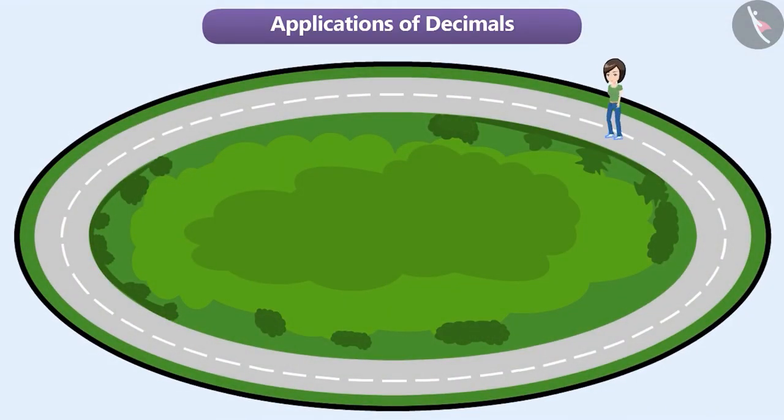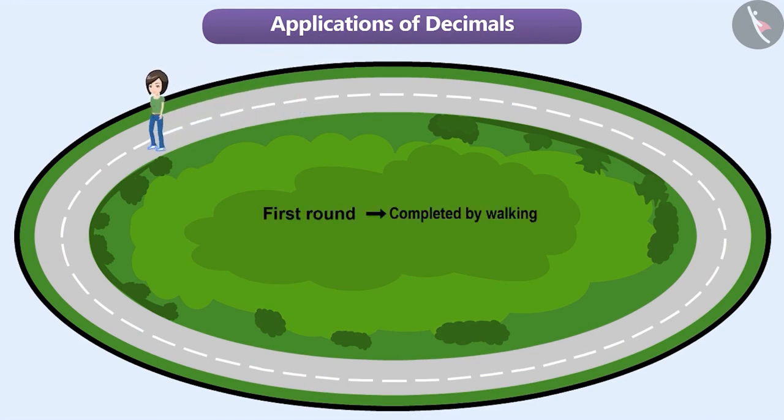Let's look at another example. Manju goes for a walk around a circular path every morning. One day, she made two rounds of the circular path. She completed the first round by walking and the second round by running.